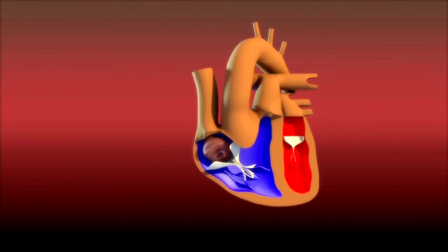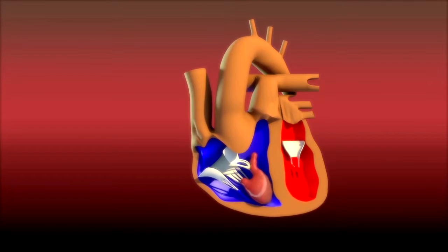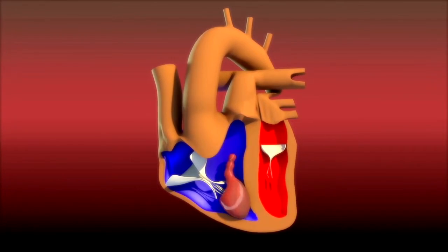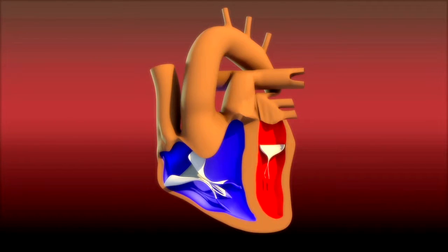The heart contracts in two stages. During the first stage, the right and left atria contract at the same time, pumping blood to the right and left ventricles.